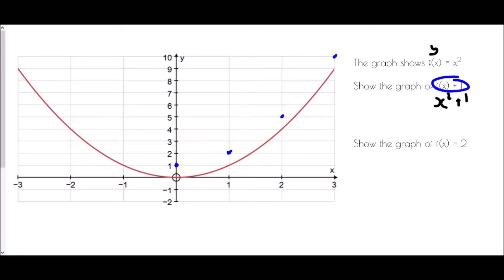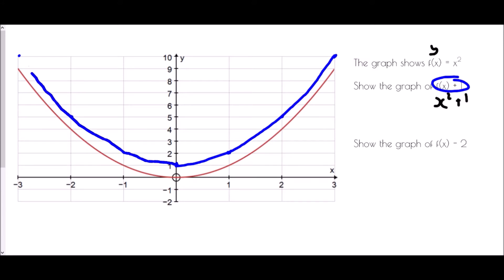If you have a look, this looks very much like the curve that we already have drawn — all we can see is that it's a little bit further up. Does that still happen in the negative values? Well, negative 1 squared is 1 plus 1 is 2; negative 2 squared is 4 plus 1 is 5; negative 3 squared is 9 plus 1 is 10. And we can see that adding 1 at the end has moved that graph up. It's exactly the same graph, just one space further up.